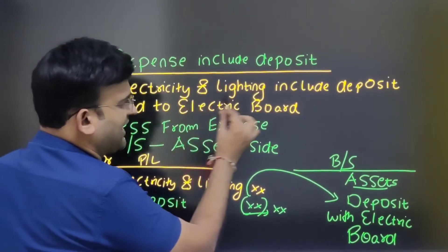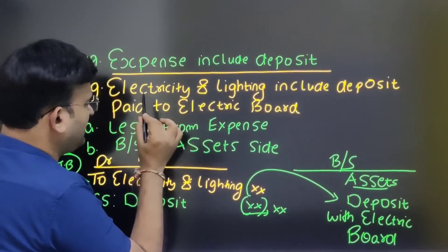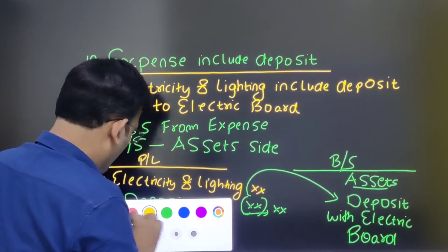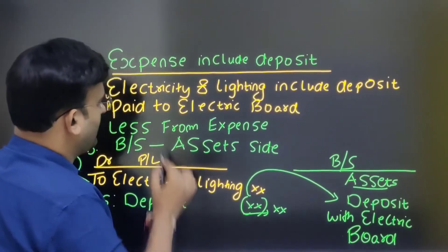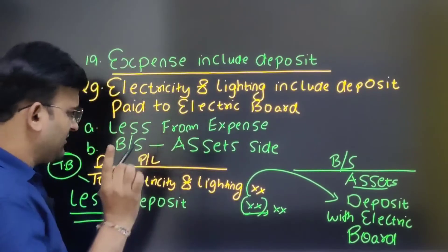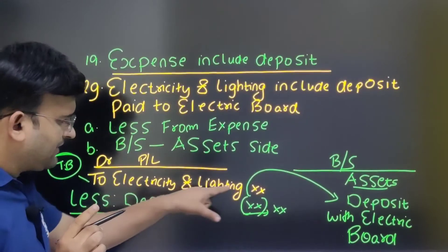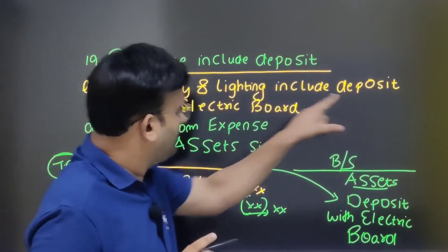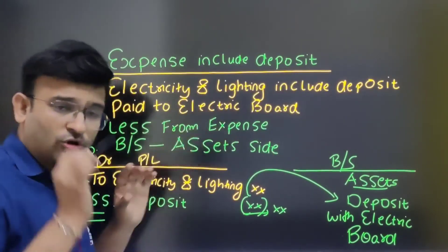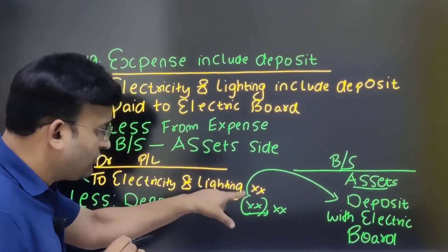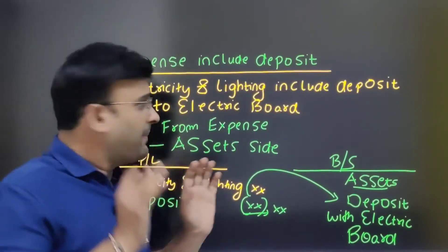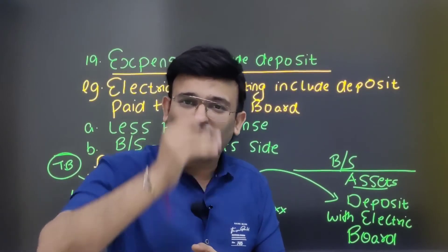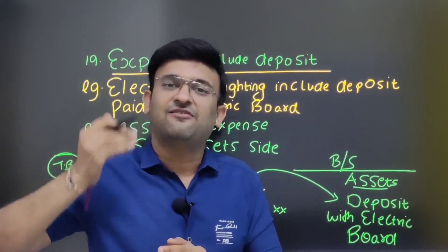For example: electricity and lighting includes deposit paid to electric board. Electricity and lighting comes in profit and loss account debit side. But we need to understand that expense and deposit are different things. A deposit is money that you pay and get back later — it is not a true expense.